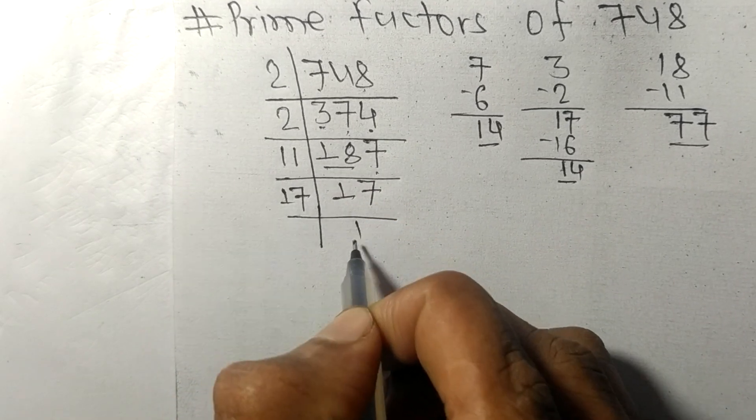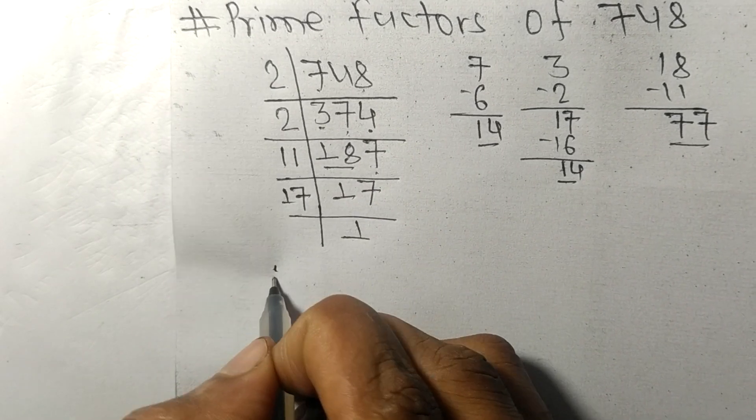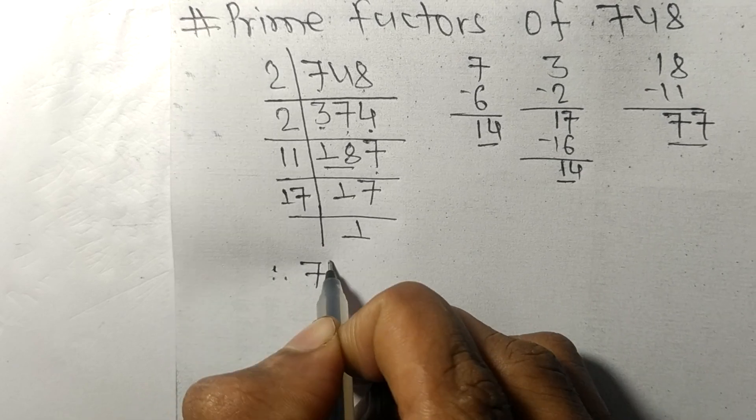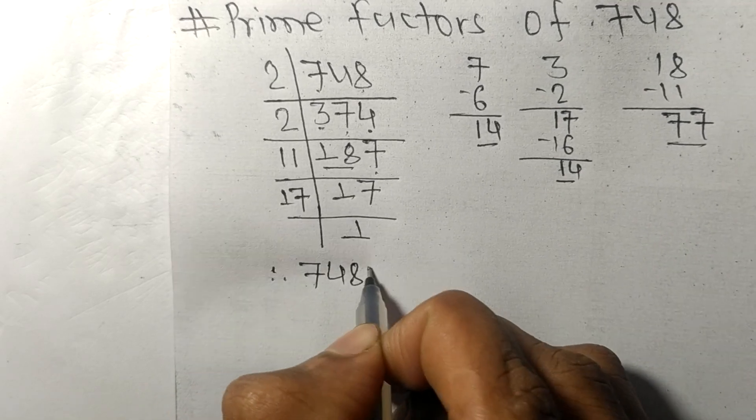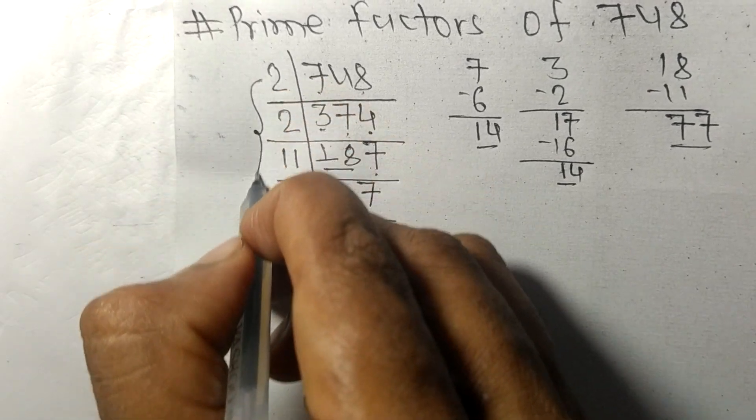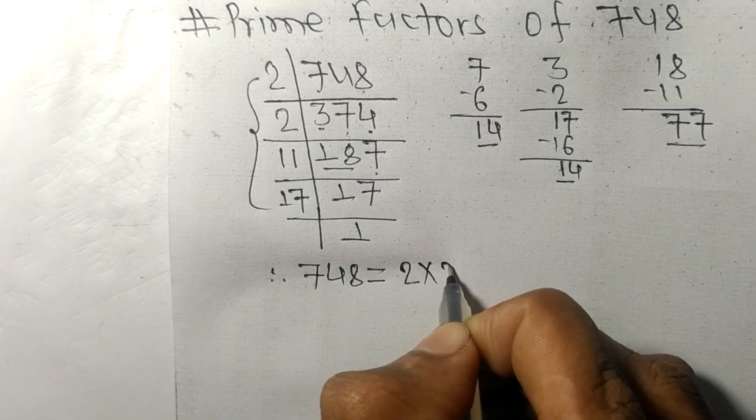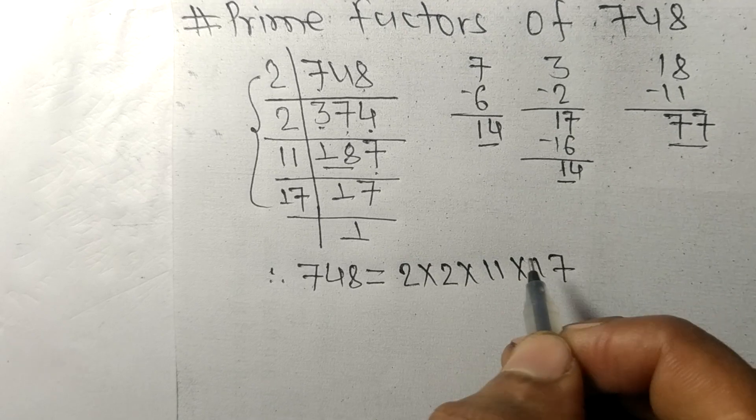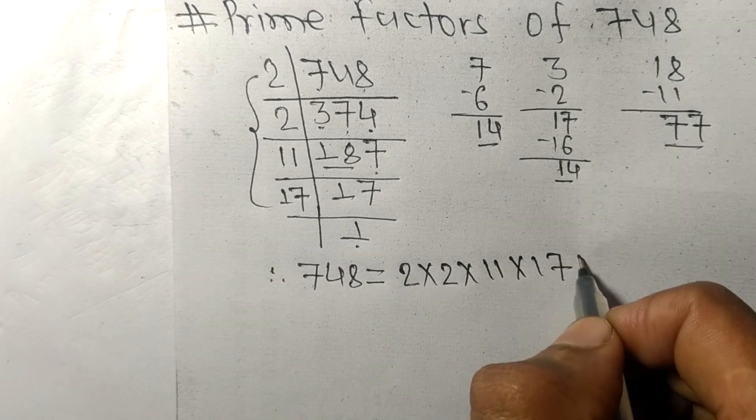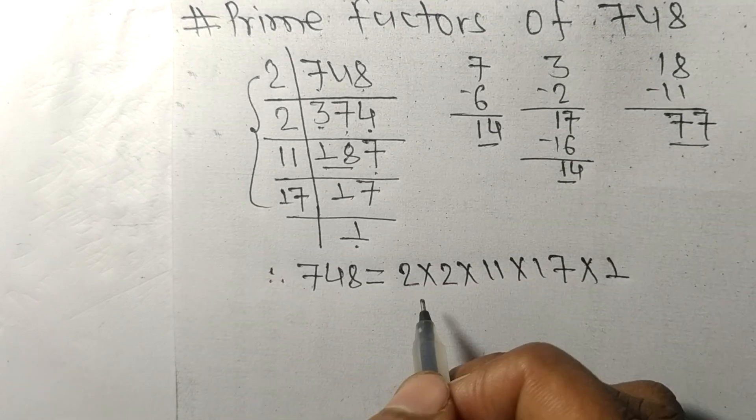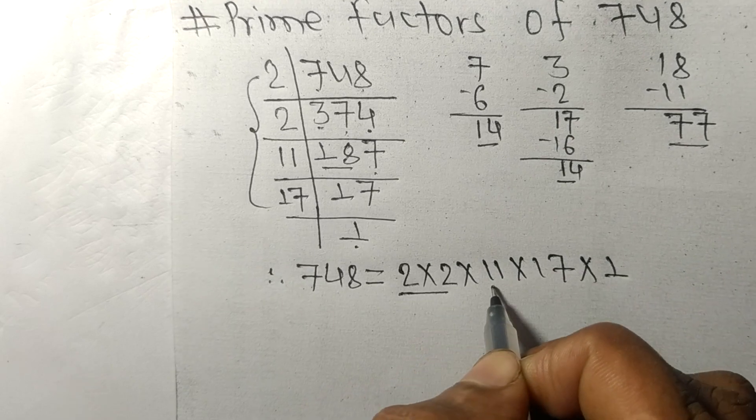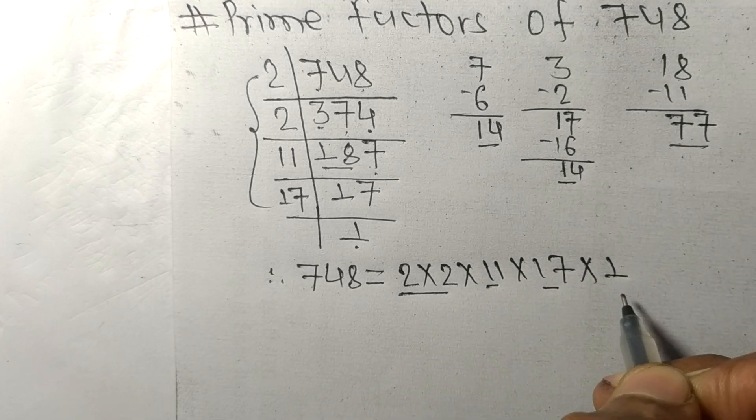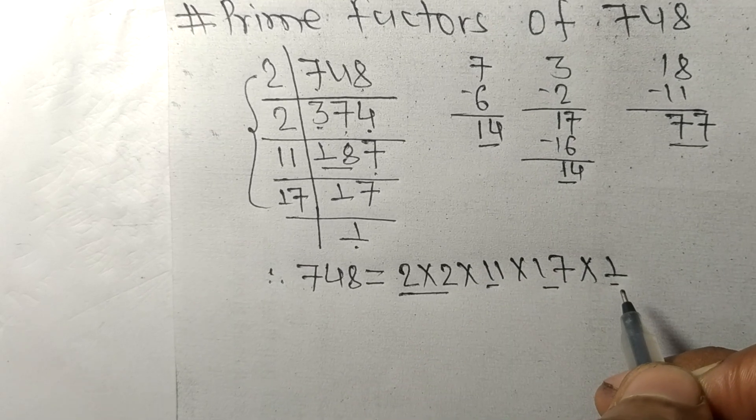On dividing we get 1. Therefore 748 is equal to 2 times 2 times 11 times 17. So 2, 11, 17, and 1 are the prime factors of 748.